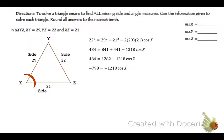You get negative 798 equals negative 1218 cosine of X. Divide by the negative, sorry, 1218. So we get cosine of X equals 798 divided by 1218.